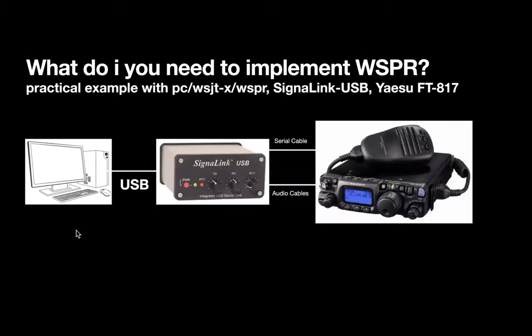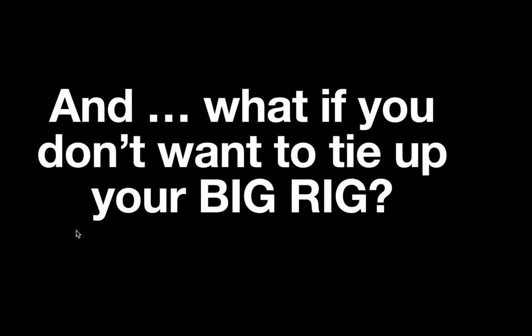Let's say you have one of the older QRP rigs — this is an FT-817. It doesn't have USB, so you've got to have a way to get things to it. Most computers nowadays don't have the old traditional serial RS-232 connectors. So you'll have to come out of USB and either have your own homemade device or use something like a SignaLink USB that gives you serial connections to the radio as well as audio in and audio out. That's how you can transmit and receive on WSPR.